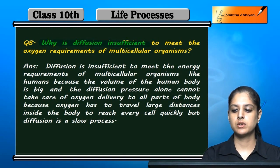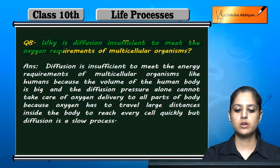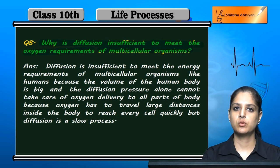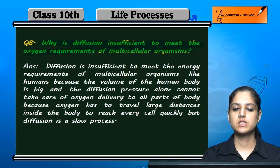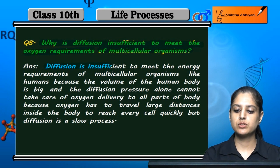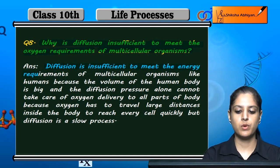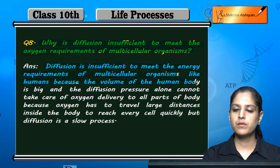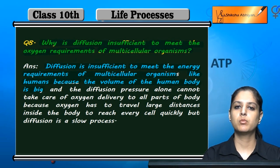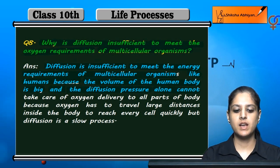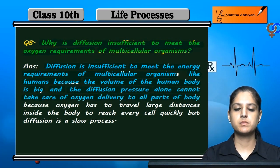Why is diffusion insufficient to meet the oxygen requirements of multicellular organisms? Because the volume of the human body is very large, the diffusion pressure is not capable of reaching all parts of the body.